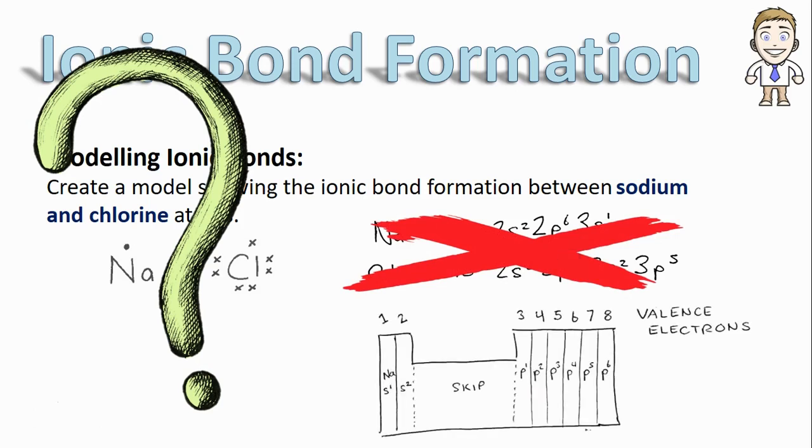For most atoms we have a shortcut that simply involves looking at the column each atom is in. Sodium is in this first column on the periodic table. All of those atoms have one valence so I can skip straight to putting in chlorine's seven valence electrons.